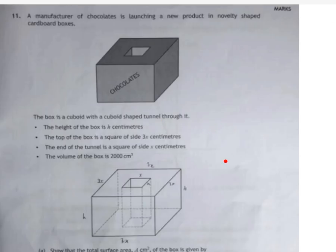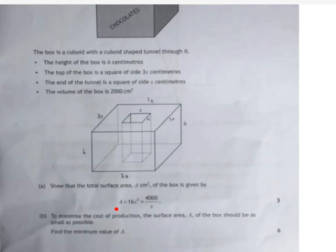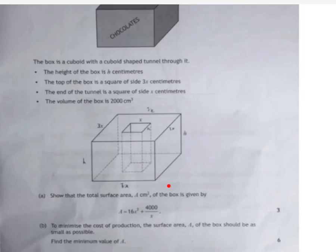All of these optimization questions start the same way. They start with establishing a relationship, and we can establish this relationship by first calculating the volume of the cuboid. That's going to be 3x multiplied by 3x, which is the area of the end, multiplied by the height. That's going to equal 9x squared h. But we've got this cutout. The volume of the cutout is going to be x times x times h.